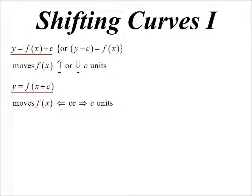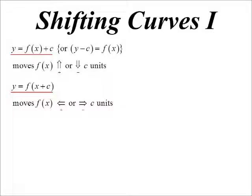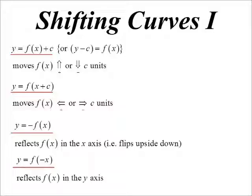It tells you where you've moved it up or down to. If we have a negative at the front of the function, so y equals negative function x, that has the effect of reflecting in the x-axis, or flipping it upside down if you like. Whereas if it's function negative x, that will flip vertically, so that'll flip in the y-axis.